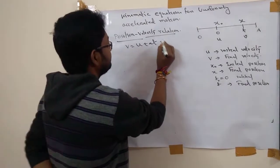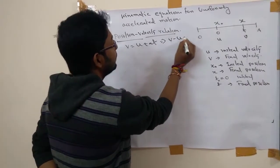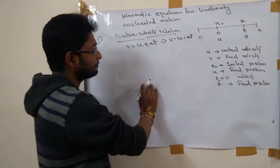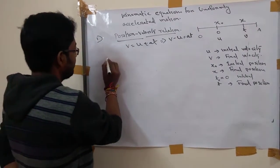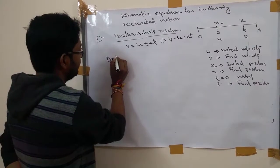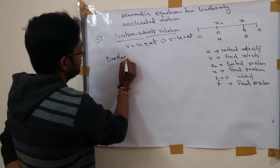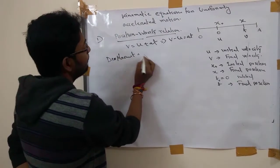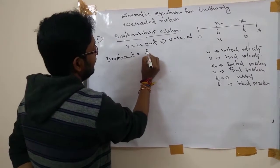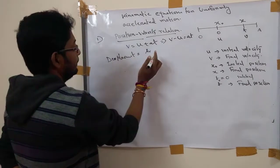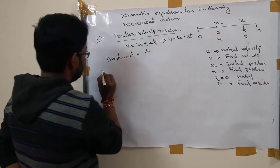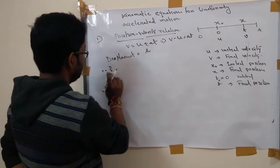This is how we accept v minus u equal to at. Now, the next I write is the displacement formula. Displacement equals average velocity into time.